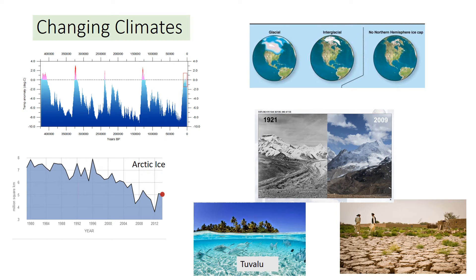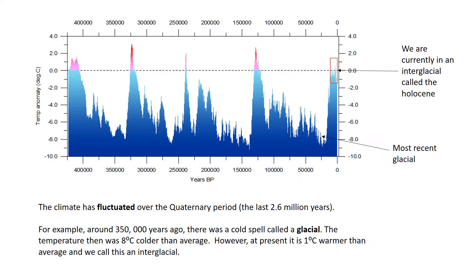This presentation gives a quick overview of the changing climates topic. Looking at a graph showing the Earth's climate over the Quaternary period, which is about the last 2.6 million years, we can see that the Earth's climate has fluctuated dramatically. For example, around 350,000 years ago there was a cold spell. We call these colder spells glacials. In this particular cold spell, the average global temperature was 8 degrees colder than the long-term average.